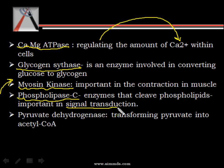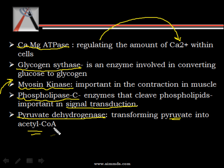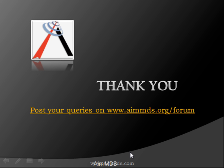Then we have phospholipase C, the enzyme that cleaves phospholipids and is important in signal transduction. We also have pyruvate dehydrogenase, which is a very important member of the pyruvate dehydrogenase complex and is important in conversion of pyruvate to acetyl coenzyme A, which is later utilized in the citric acid cycle. Calmodulin is also abundantly found in enamel and plays an important role in calcium binding there too.